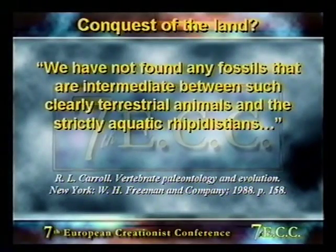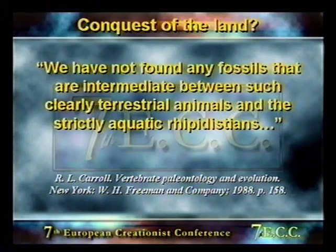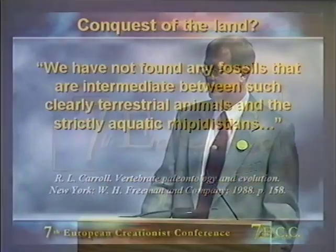Because of these somewhat fish-like characteristics, Ichthyostega featured prominently in discussions of tetrapod ancestry and was thought to be the earliest ancestor of all land animals. Nevertheless, it was pictured predominantly as a land-dwelling vertebrate. Robert Carroll wrote: 'We have not found any fossils that are intermediate between such clearly terrestrial animals and the strictly aquatic rhipidistians.' That was back in 1988, but there have been more recent discoveries.